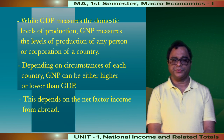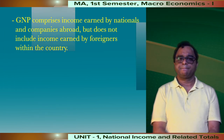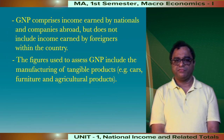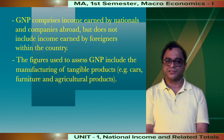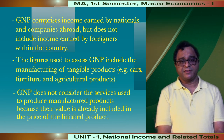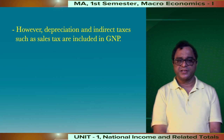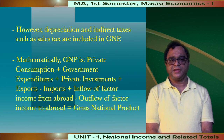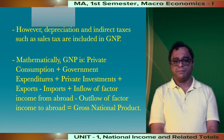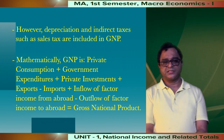This depends on the net factor income from abroad. GNP comprises income earned by nationals and companies abroad but does not include income generated by foreigners within the country. The figures used to assess GNP include the manufacturing of tangible products such as cars, furniture, and agricultural products. GNP does not consider the services used to produce manufactured products because their value is already included in the price of the finished products. However, depreciation and indirect taxes such as sales tax are included in GNP. Mathematically, GNP equals private consumption plus government expenditures plus private investments plus exports minus imports plus inflow of factor income from abroad minus outflow of factor income from abroad.